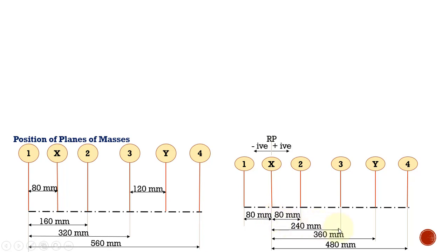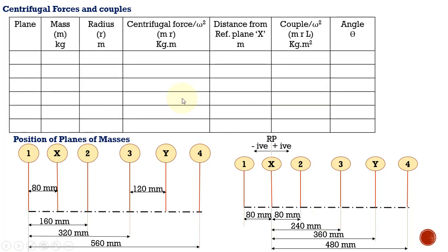Now let us set up the tabular column to find centrifugal forces and couples. We have planes 1, x (reference), 2, 3, y, and 4. The masses are: plane 1 has 9 kg, plane x has mx (unknown), mass 2 is 7 kg, mass 3 is 8 kg, my is unknown, and mass 4 is 6 kg. The radius of rotation for the counter masses is 0.1 meter as given in the problem.